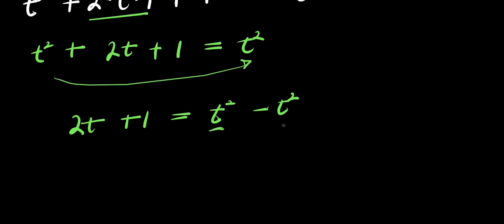So t squared minus t squared is 0, so from here we have 2t plus 1 equals 0.